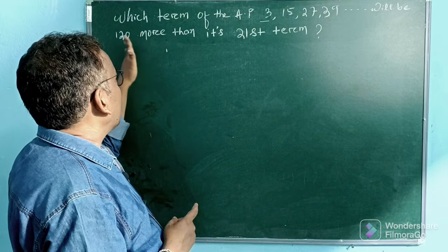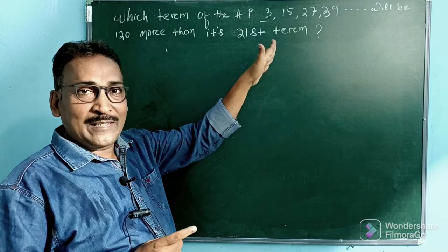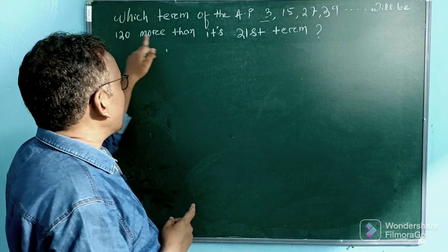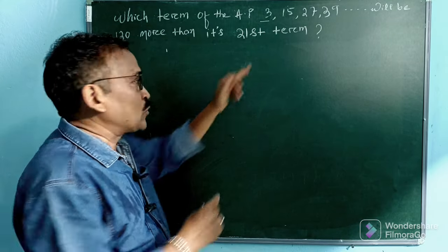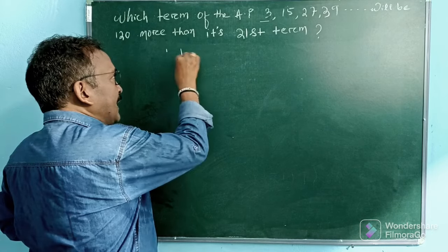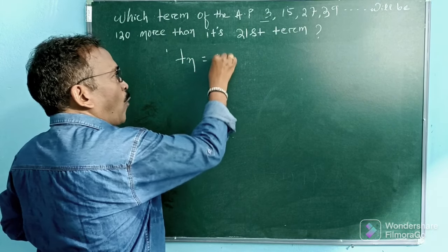And the Tn, we have to see here. Tn is 120 more than its 21st term. So here we have to write Tn is equal to T21 plus 120.